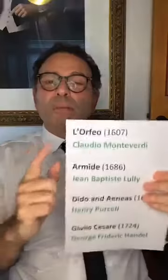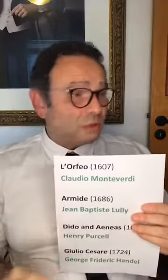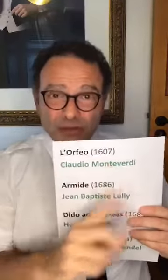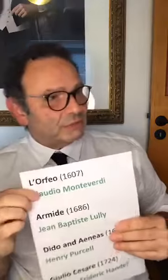Monteverdi's opera L'Orfeo is considered the first opera. It's the story about the guy who goes to get his girlfriend who got stuck in hell. The devil tells him: if you don't look back, you can take her with you — but if you look behind, you stay there forever. He looks back, falls into hell, and stays there forever. This Greek myth of Orpheus comes back repeatedly in the history of opera.